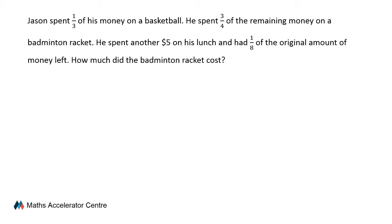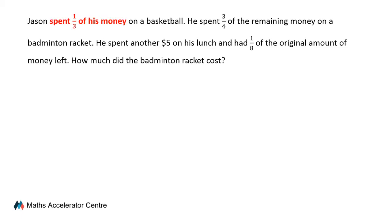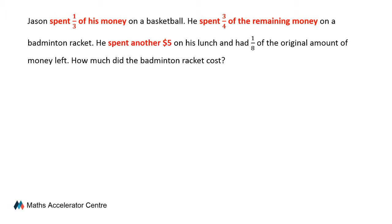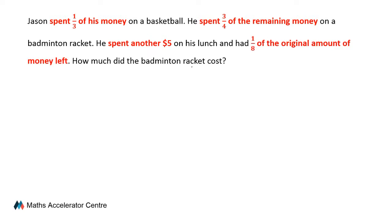Step 1 is to highlight the keywords in this question. The first set of keywords indicates that he spent one-third of his money on a basketball. The second set of keywords informs us that he spent three-quarters of the remaining money on a badminton racket. Then he spent another $5 on his lunch and had one-eighth of the original amount of money left.